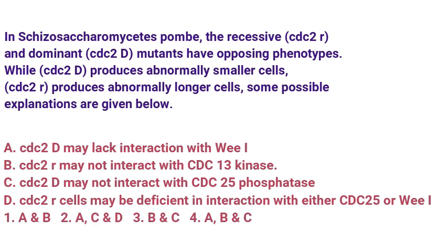CDC 25 activates CDC kinase. If CDC 2 gets mutated, cells do not divide but continue to grow — result? Larger cells. Cells lacking CDC 25 phosphatase produce larger cells. CDC 2R lacks CDC 25 phosphatase — look for that option. It's not directly in the options, but if cells lack CDC 25 phosphatase, there is no interaction with CDC kinase. So option B is also correct. Answer is A and B. If we haven't studied like this, we won't consider other options, resulting in a negative mark. Study this way — the concept stays in our brain forever.